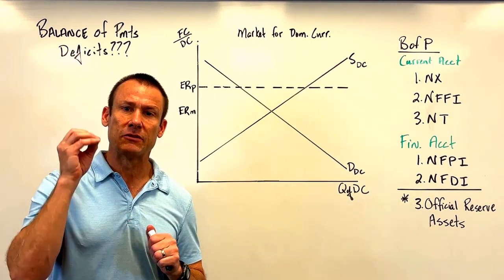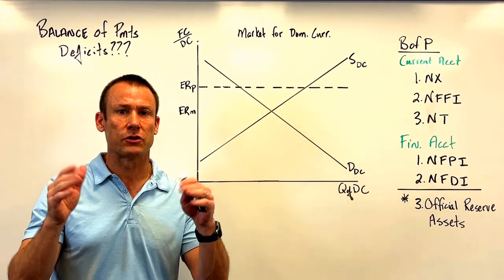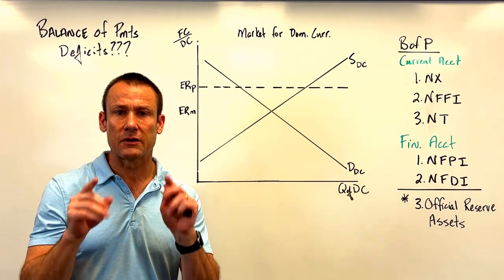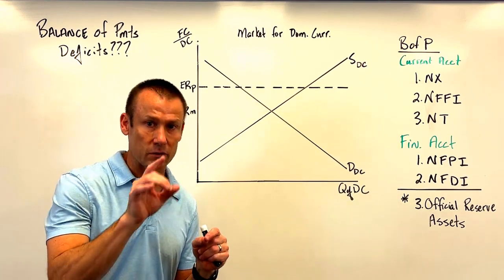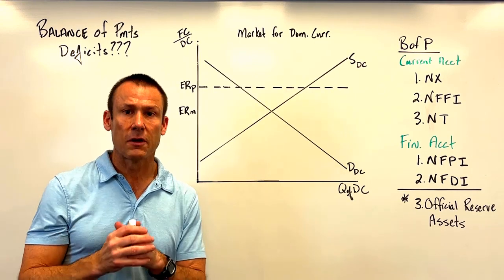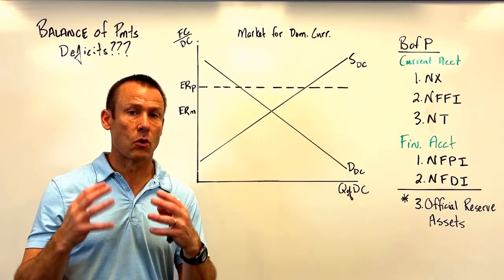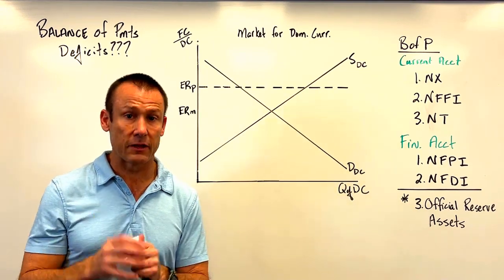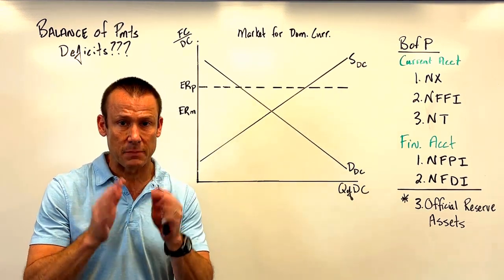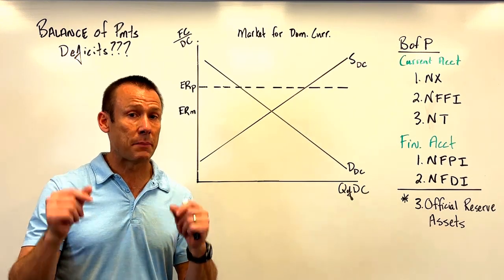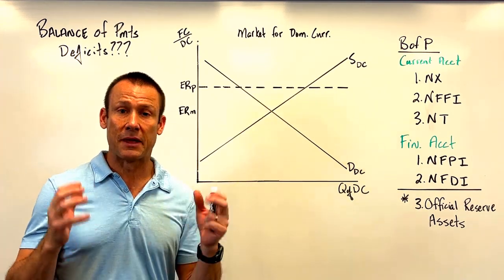First big takeaway: a balance of payments deficit only applies to countries that have a pegged exchange rate. Right from the beginning — a balance of payments deficit only applies to countries that have a pegged currency. The United States does not have a pegged currency. We do run current account deficits and financial account surpluses, but we do not run balance of payments deficits. If you have flexible exchange rates, your exchange market clears — the quantity supplied and the quantity demanded of your currency equal — you will have a balanced balance of payments. Now let's get back to countries that have a pegged currency.